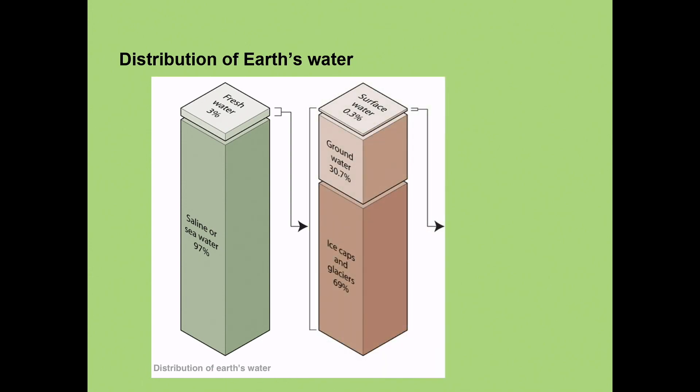Surface water of this three percent is 0.3 percent. So what's on the surface. If you've watched the introduction video, you will know I'm referring to rivers, streams, lakes, that kind of thing. Rivers, streams and lakes, that is 0.3 percent of this fresh water that is on earth.